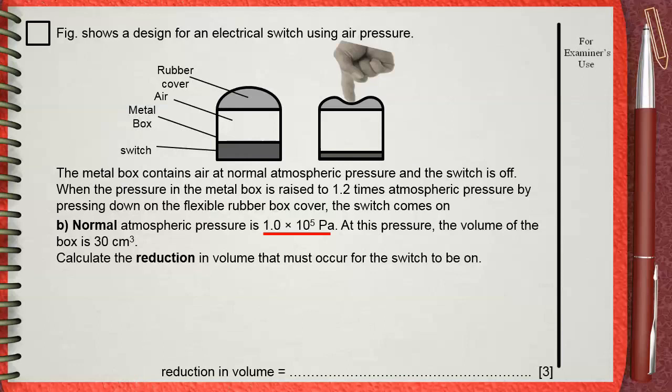the volume of the trapped air under the rubber box is 30 centimeters cube. Let's go back to the head of the question, which says that when the rubber cover is pushed and air pressure becomes 1.2 times the atmospheric pressure, the switch will come on.